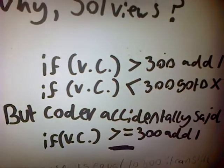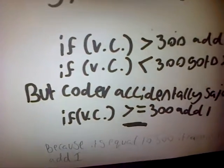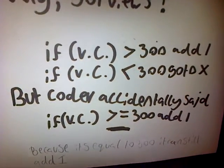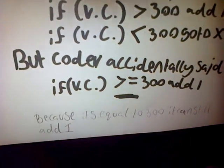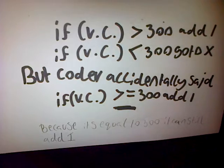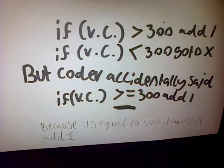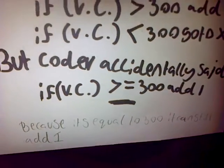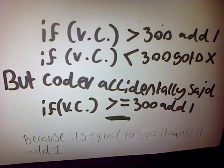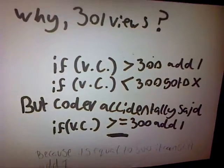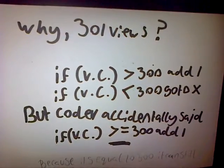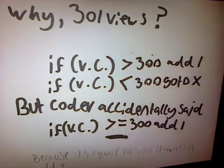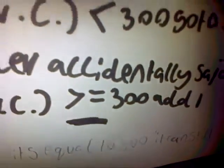And if the view count is greater than 1, go to x, and x will just be something. The code accidentally put: if view count is less than or equal to 300, add 1. And that is why it gets to 301 — because it's equal to, but it still adds 1 because it's equal to 300, giving you 301.